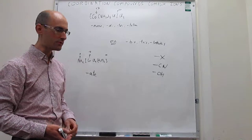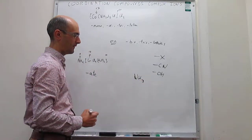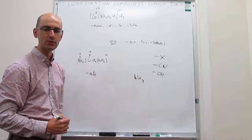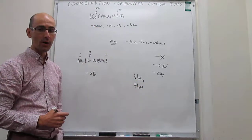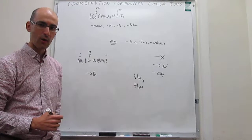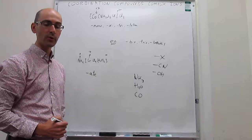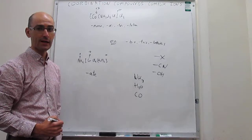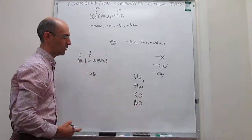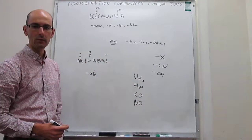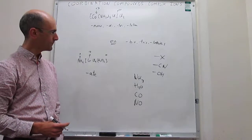For neutral ligands, there are important exceptions. NH₃ is called ammonia as a molecule, but the ligand is called amine. Water's ligand name is aqua. Carbon monoxide is called carbonyl as a ligand. And nitrogen monoxide's ligand name is nitrosyl. These are common ligands whose special names need to be memorized.